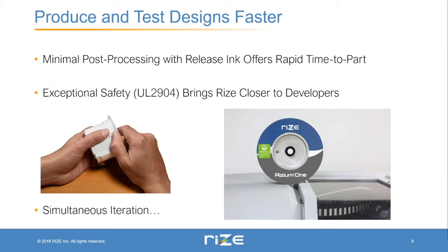RIZE technology allows you to produce and test designs faster. We use release ink to separate support and model structures, which allows you to remove support quite easily, often by hand. Because of this, you spend very little time post-processing parts — often just a few seconds or a few minutes to get a part ready to test. For smaller parts, it's sometimes possible to iterate through them multiple times in a single day, which can drastically speed up the prototyping process.